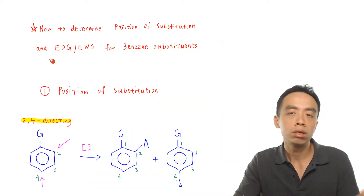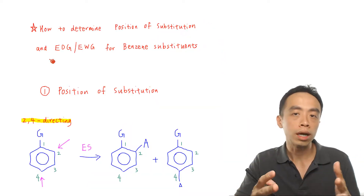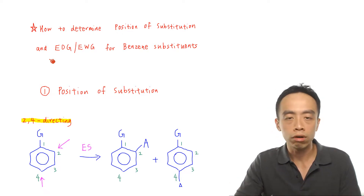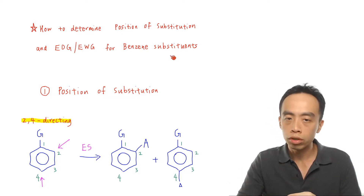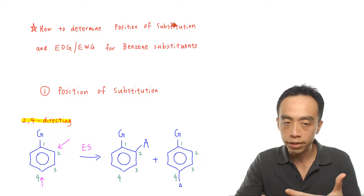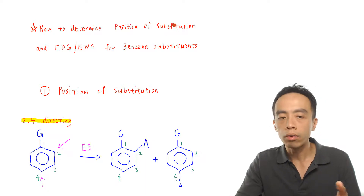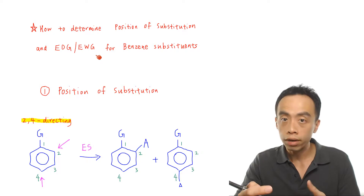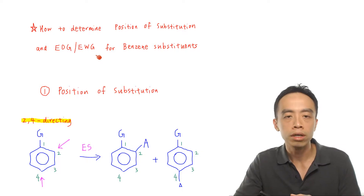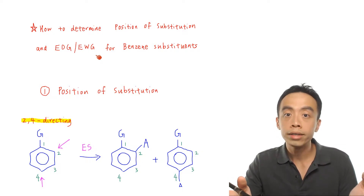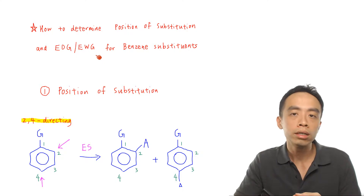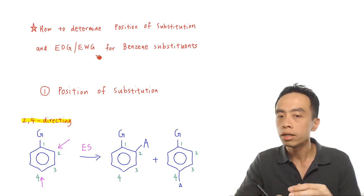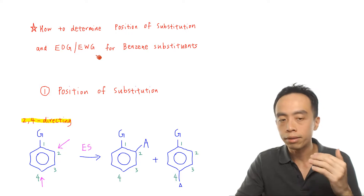Before we jump in to determine which groups are donating and withdrawing, we want to run through the idea involving position of substitution involving benzene, as well as how electron donating groups and withdrawing groups affect the reactivity of benzene. These two ideas are actually related to each other, so most of the time we will learn them concurrently. Let's run through these ideas part by part.